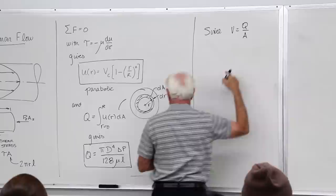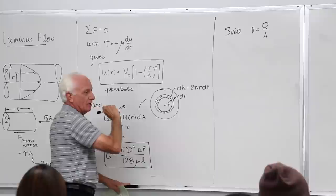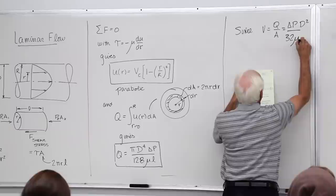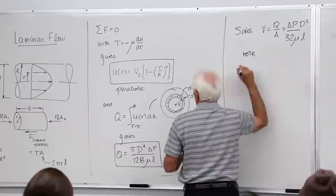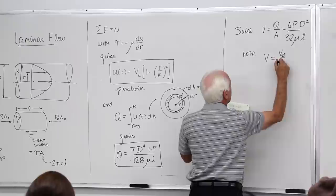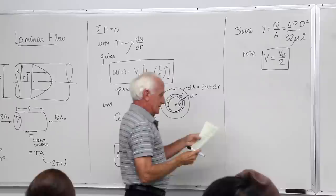Since V equals Q over A, we put that Q up there, divide it by the area pi big R squared, and we get the average velocity delta P D squared over 32 mu L. We compared that to VC, that the average velocity was just VC over 2.